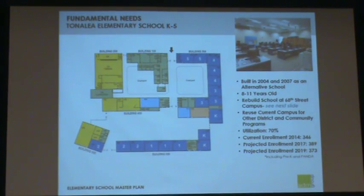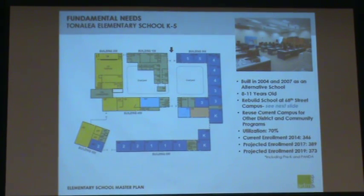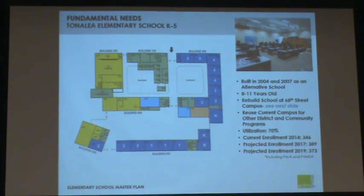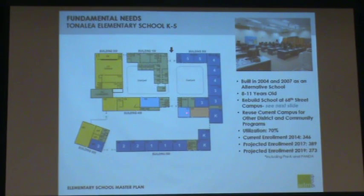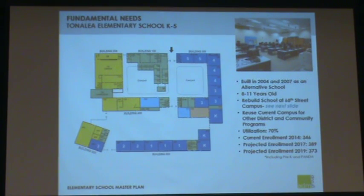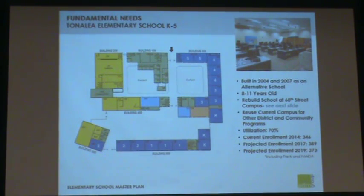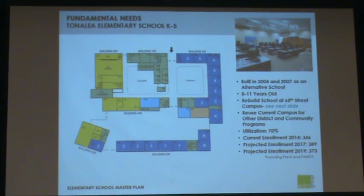Tonalia Elementary School, K-5, was built in 2004 and 2007 as an alternative school — 8 to 11 years old. One option is to possibly move that school to the 68th Street campus and use the current campus for other district and community programs. There are only really two light-blue classes in this area, so utilization is 70%. Current enrollment for November 2014 is 346. It goes up to 389 in 2017 and down to 373 in 2019.